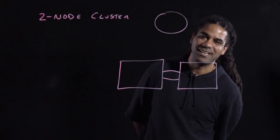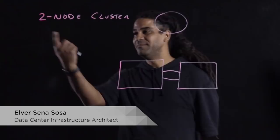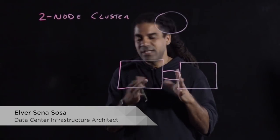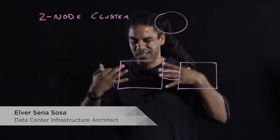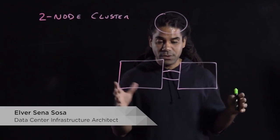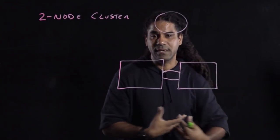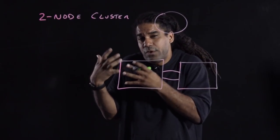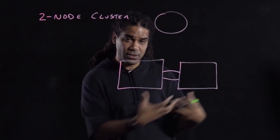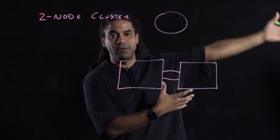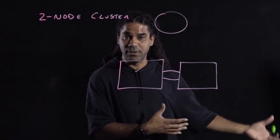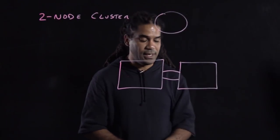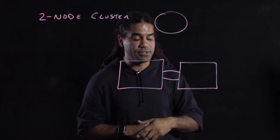Hola, soy Elber Sena Sosa, and now we're talking about the two-node cluster, which is actually a rather neat solution if you think about it. The idea of the two-node cluster is you have a small location where you just need maybe one host for your compute needs, but you want to have some redundancy. You're remote in the middle of nowhere — you don't want the whole site to go down just because a node fails. So you usually install two hosts at that location to run your local workloads.